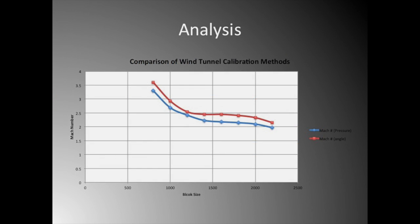As you can see in this graph, the stagnation pressure method gave an average of 10% lower Mach numbers. Both methods followed similar trends.